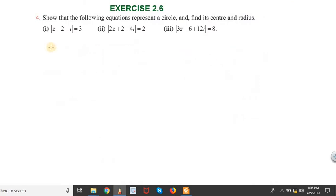The first problem: |z - 2 - i| = 3. We can write this as |z - (2 + i)| = 3. This is in the form |z - z₀| = r, where z₀ is the complex number 2 + i, and r = 3.